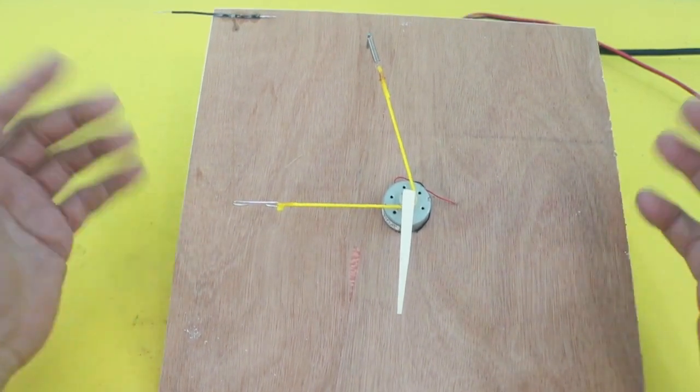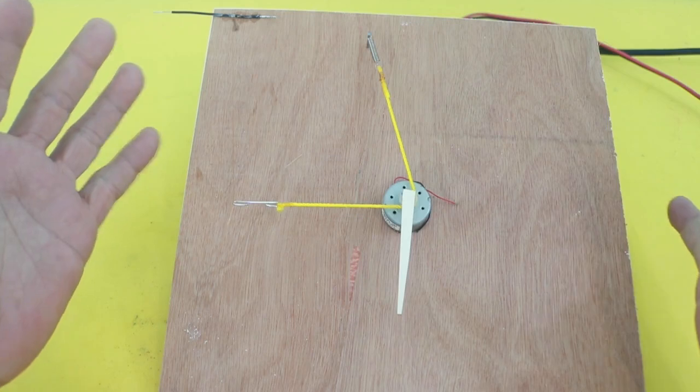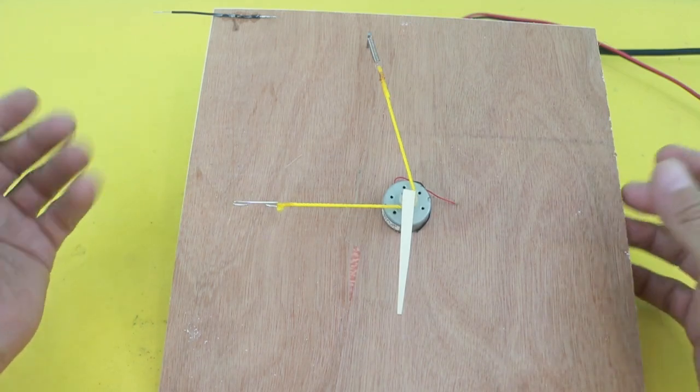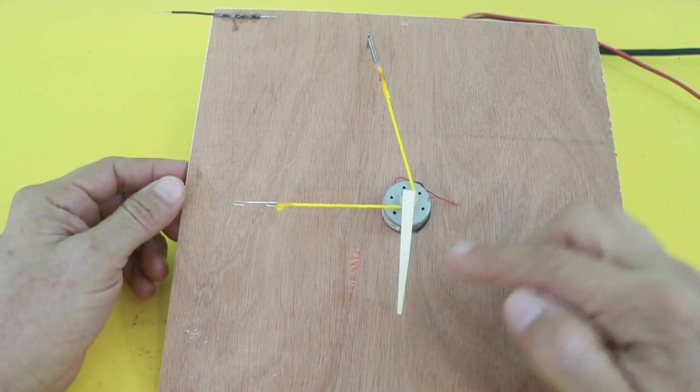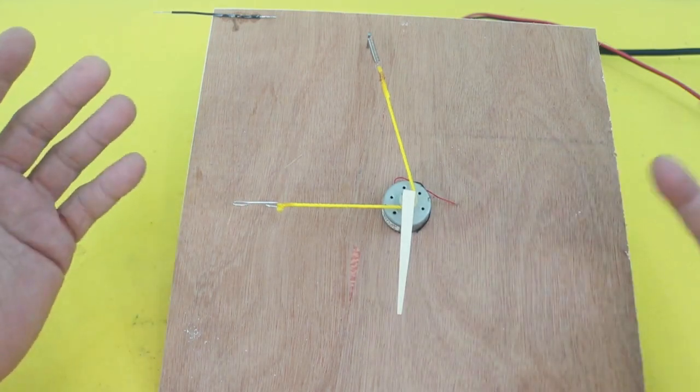And even if you have some air currents in your room, the air will cool the wire and your measurement will be wrong.